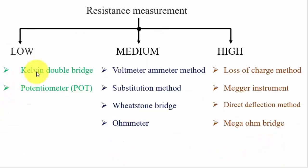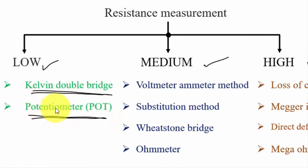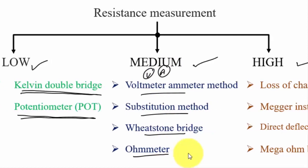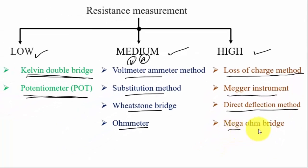For resistance measurement: low value resistance — use Kelvin's double bridge or potentiometer. Medium value resistance — use ohmmeter, ammeter-voltmeter method, substitution method, Wheatstone bridge. High value resistance — use loss of charge method, Megger instrument, direct deflection method, or mega ohm bridge. For engineering service exams, the Megger instrument topic is very important.